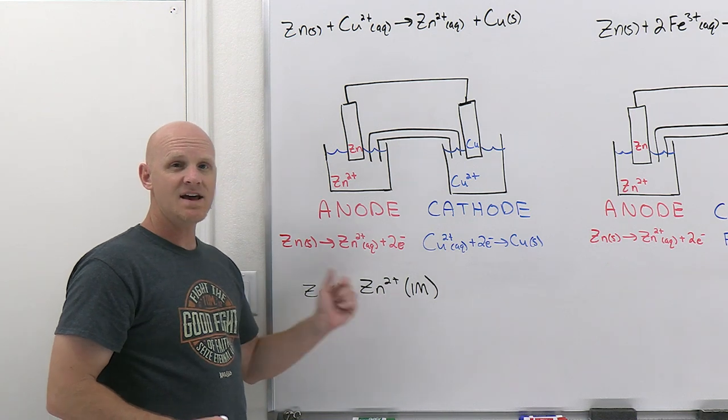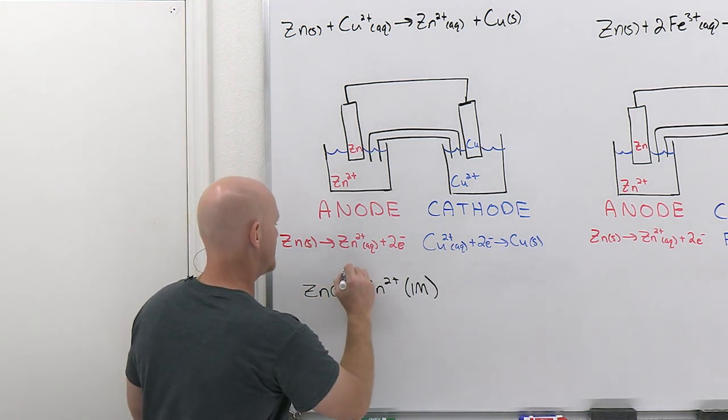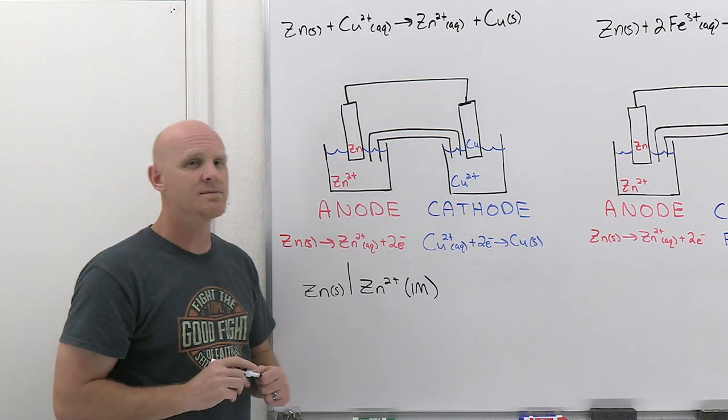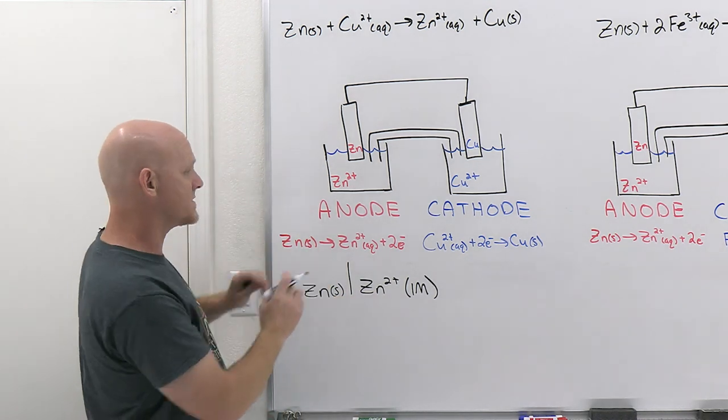But notice, these are in different phases, this guy's solid, this guy's aqueous, and when you've got two components in a half cell that are in different phases, you put a single vertical line between them, a single slash like so, and that is proper. So there is our anode compartment.